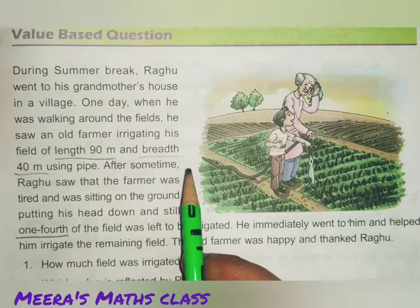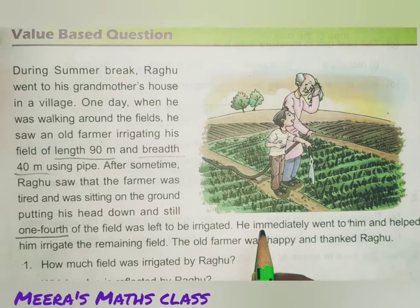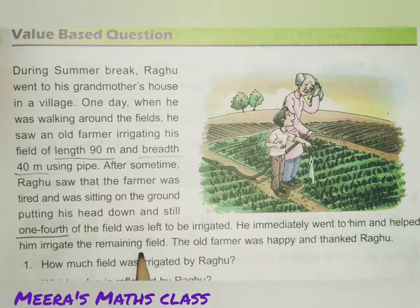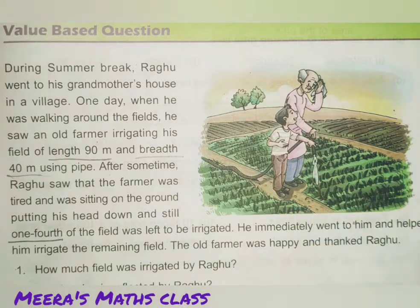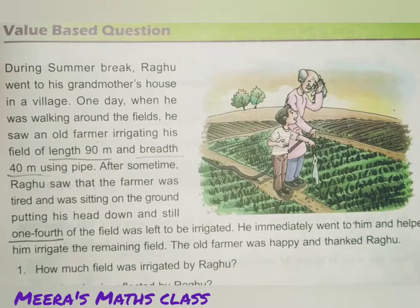What is irrigate, meaning of irrigating? That means watering the field, supplying water to the field. He immediately went to him and helped him irrigate the remaining field. So, the old farmer was too tired and he was sitting. Seeing this, Raghu felt that I should go and help him and he went and helped him to irrigate the rest of the field, which was one-fourth of the field. The old farmer was happy and thanked Raghu. I hope you understood this question. Now, let's see how to solve the given questions in this value-based question.